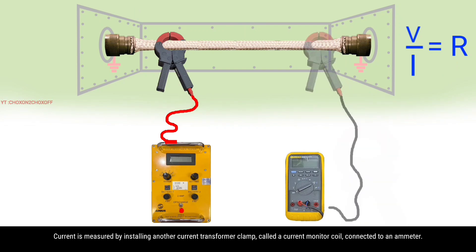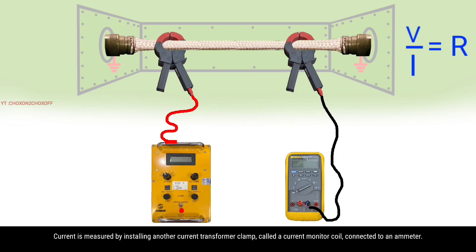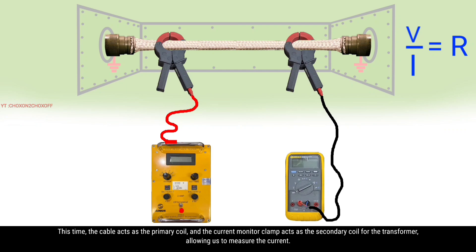Current is measured by installing another current transformer clamp called a current monitor coil connected to an ammeter. This time the cable acts as the primary coil and the current monitor clamp acts as the secondary coil for the transformer, allowing us to measure the current.